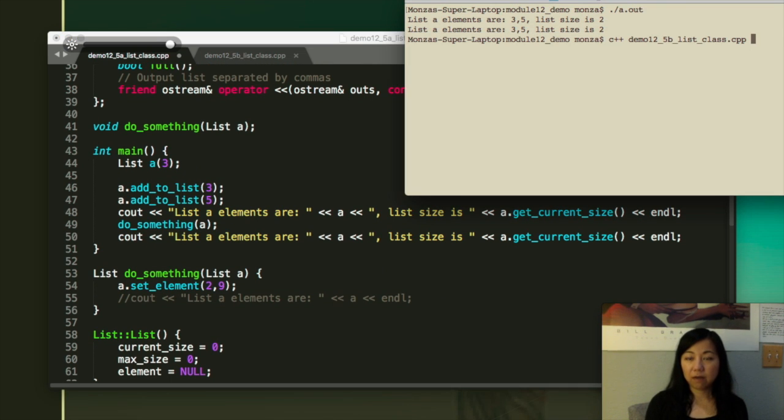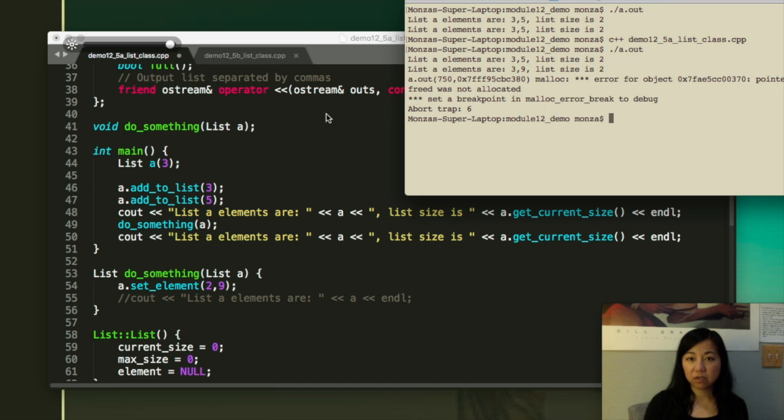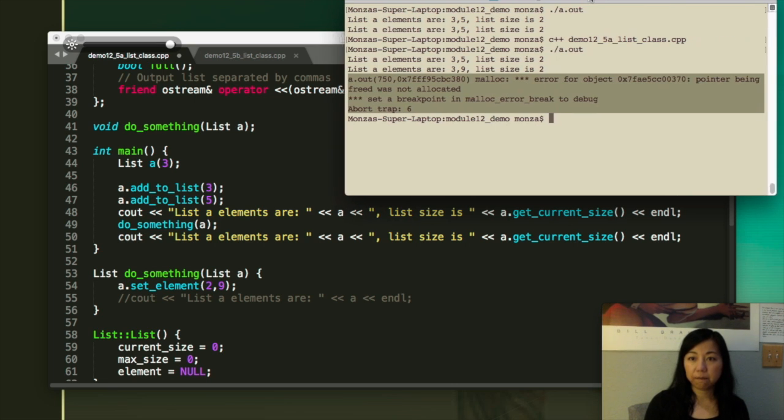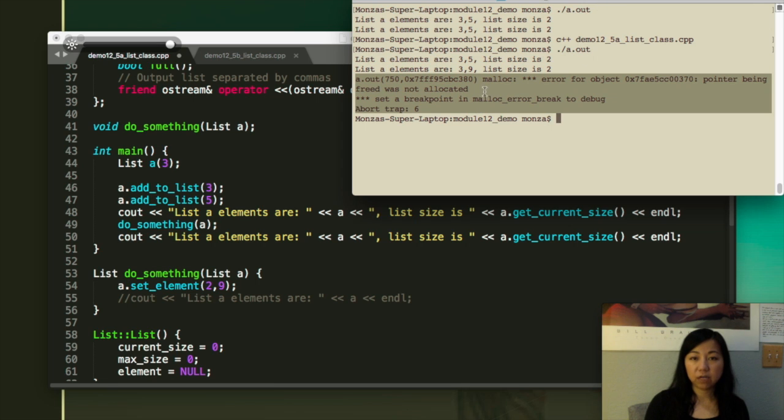We would run the same code and see what happens. So I'm going to include this code also in your list of demo that you can download. So if you run it, you see that there is something happened. It said that the pointer is being trying to be freed when there's actually no memory being allocated.